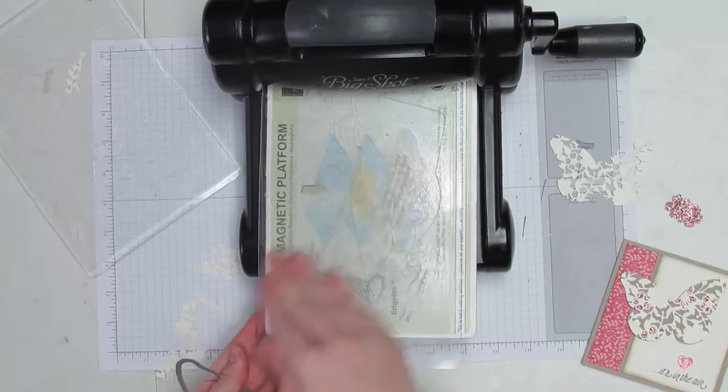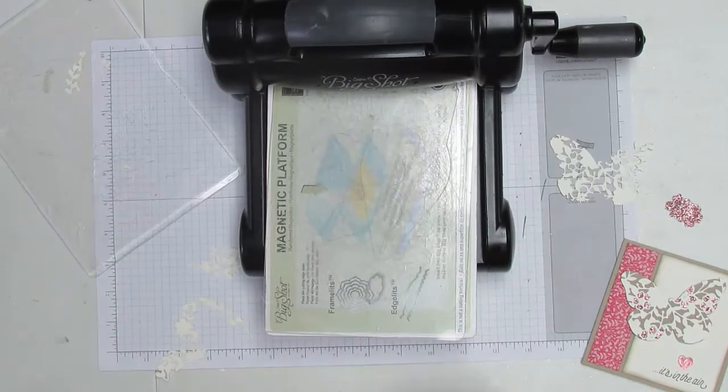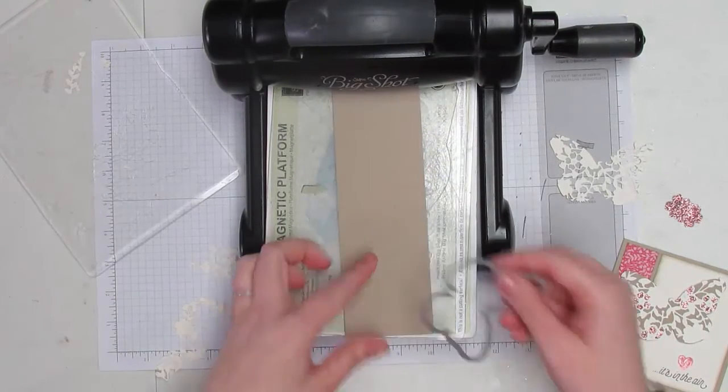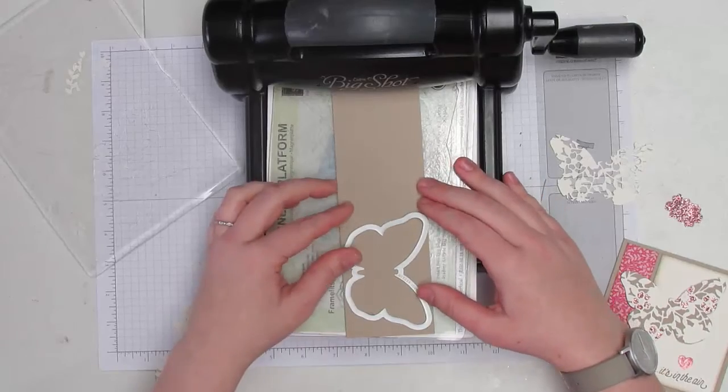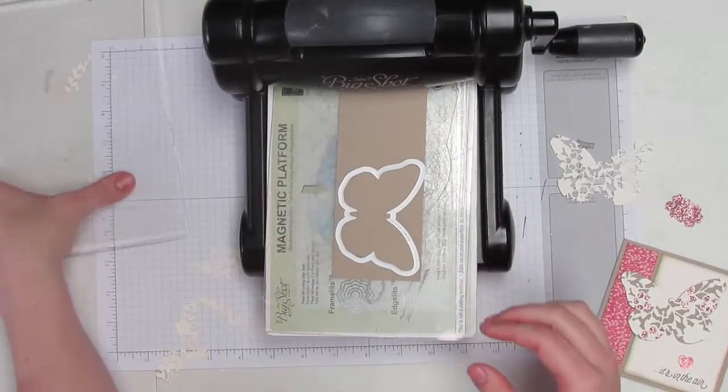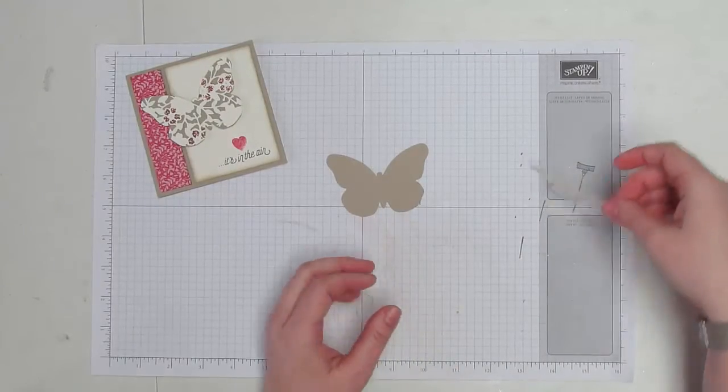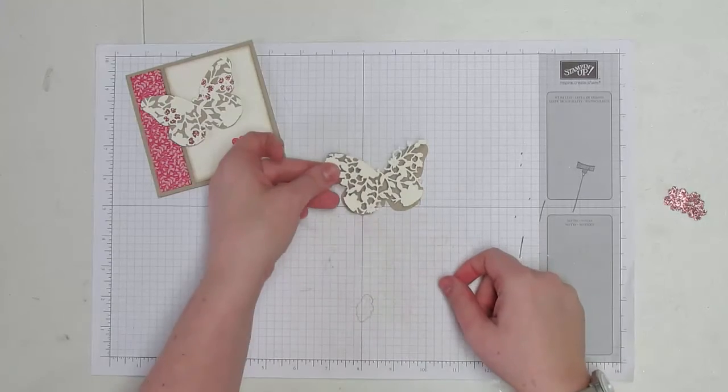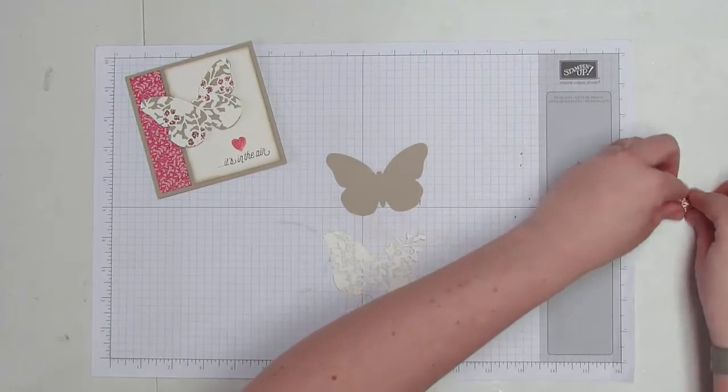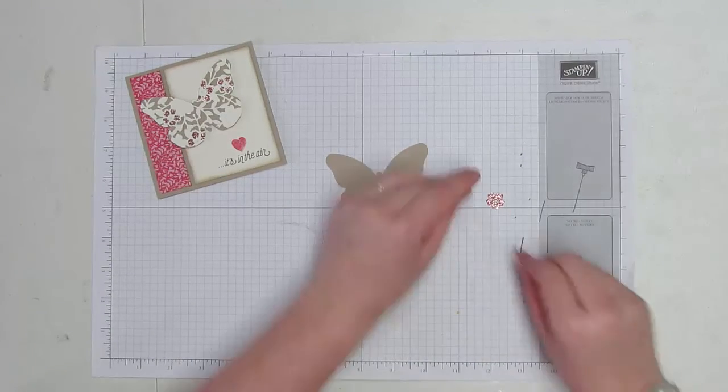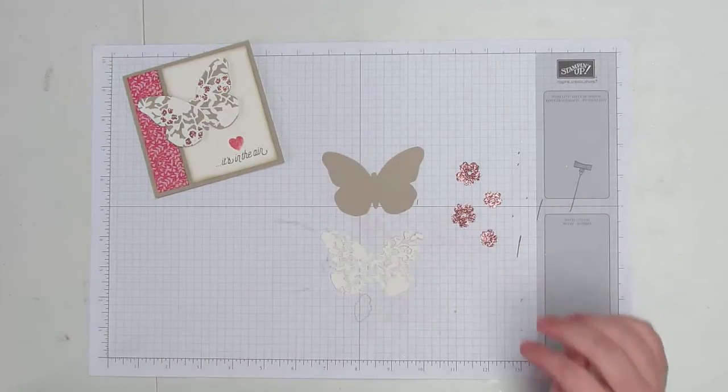Once you have this out, it just pops right out and you have your little delicate butterfly. You're going to also want to take a piece of scrap Crumb Cake and cut out a second butterfly. Same butterfly, just now in a different color of cardstock. So we have our die cut solid butterfly, our die cut lacy butterfly, and then our little flowers.